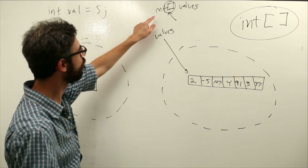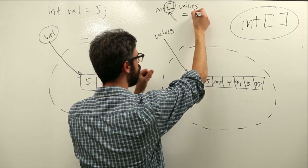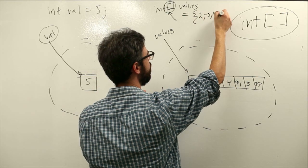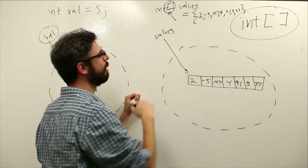Once we have this list, we can actually initialize it by saying curly bracket: 2, negative 5, 107, comma 4, comma 91, comma 3, comma 33.